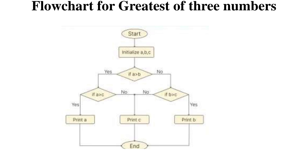If yes, it will move to check another condition: A greater than C. If that condition is also true, then A is the greatest of all three numbers. If A greater than B follows the negative path — that is no — then it checks the condition B greater than C. If that condition is true, it prints B as the greatest number. Even if both conditions fail, then C is automatically the greatest of all three. So here it involves three decision-making symbols, and each decision-making symbol will have one input and two outputs — one for the yes condition and one for the no condition.